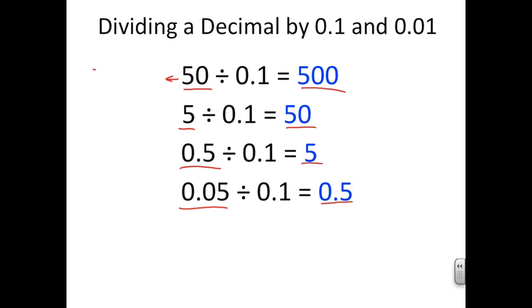So in the case of 50 divided by 0.1, I had to move my decimal place one place to the right. So my decimal is here. One place to the right means I have to add in a zero. My answer was 500.